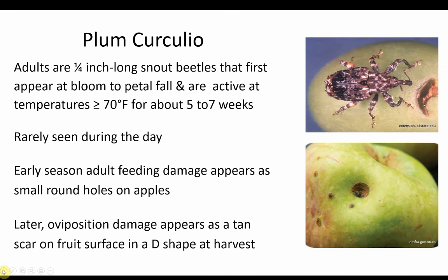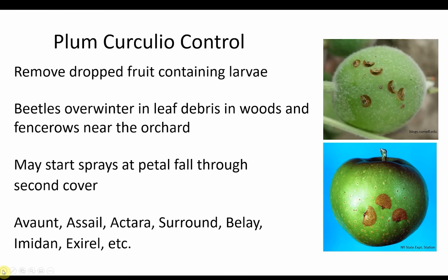Plum curculio is a small snout beetle that first appears at bloom to petal fall and is active at temperatures above 70 degrees for about five to seven weeks. These insects are rarely seen during the day. Early feeding damage appears as small round holes on apples; later, after they deposit their eggs, the damage is a tan scar on the fruit surface, often in the shape of a D. To limit plum curculio, remove dropped fruit that contains larvae. Products listed here can be applied at petal fall through second cover.